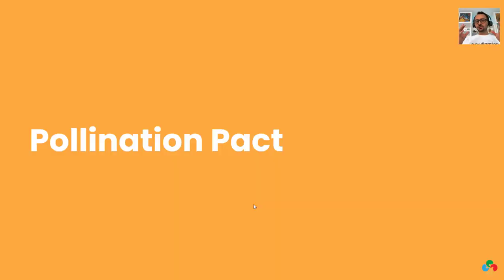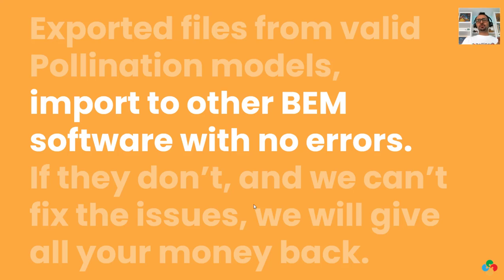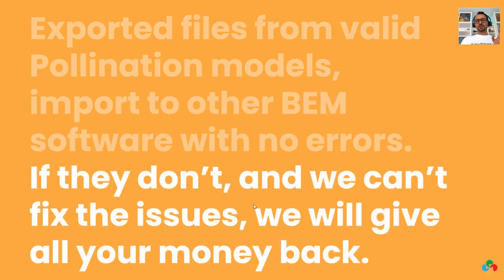So yeah, you can do all that. And we have a pact with you. If you export these files as valid files, they will be imported to other tools with no errors. If they don't, you just report it and we fix that bug. If we can't fix it, we will give all your money back. This doesn't include GBXML. There is a page, pollination.solutions/pact. You can see what is our pact. GBXML, we cannot guarantee because it depends how it gets imported on the other end, but all the other file formats, we guarantee that the model will be imported with no errors.